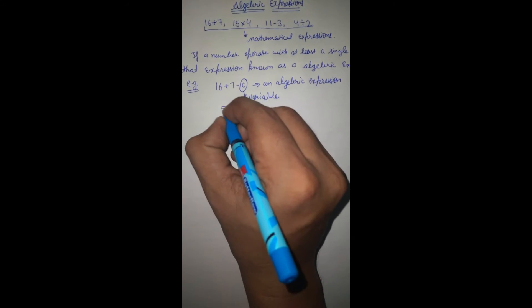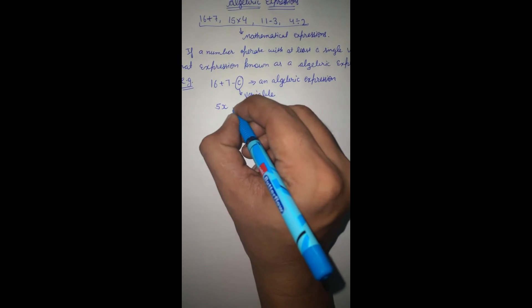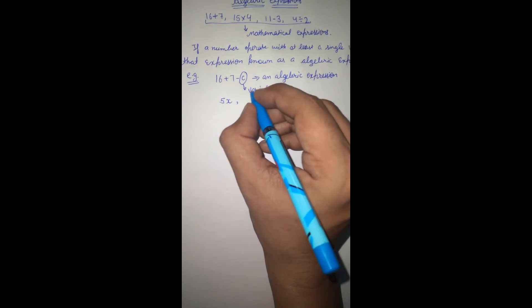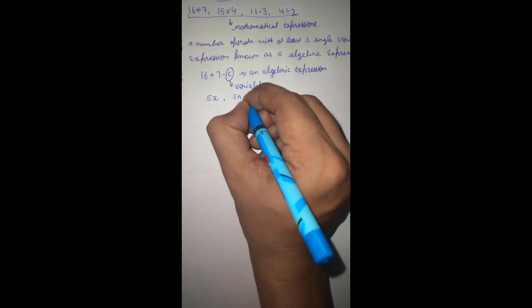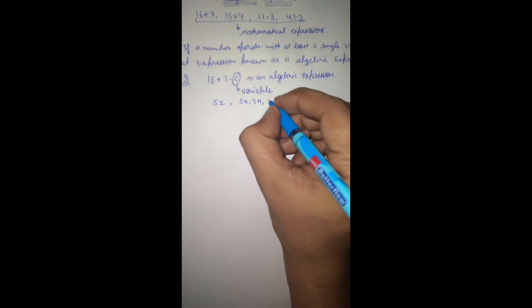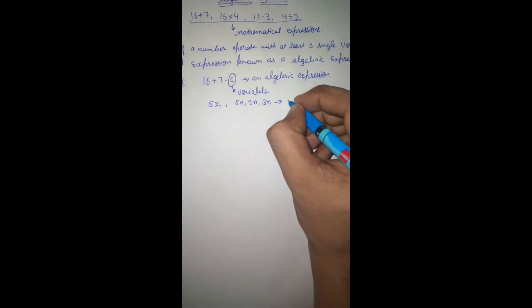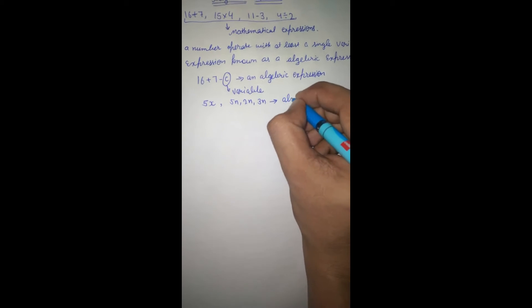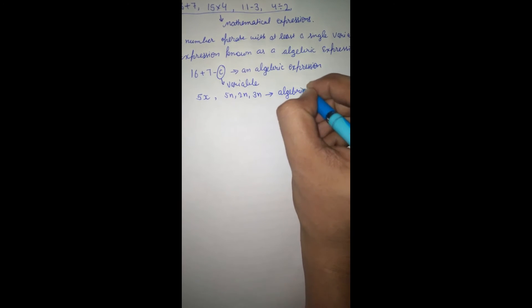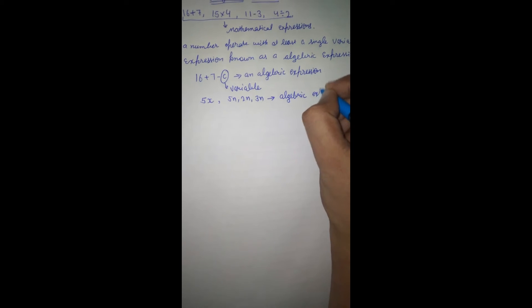If we have 5x, now in the previous chapter we discussed about 5n, 2n, 3n. These are also algebraic expressions.